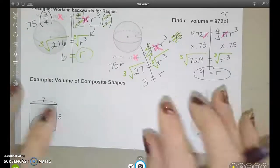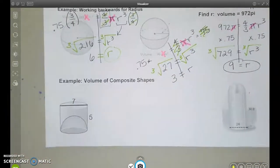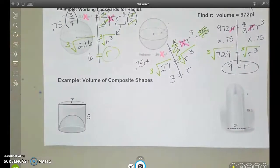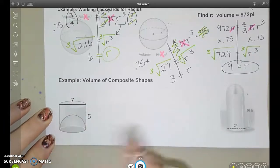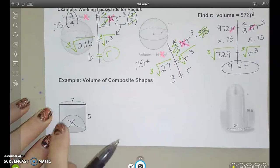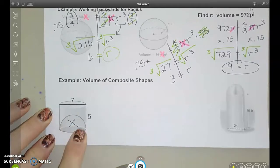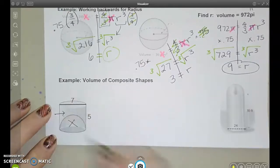Last bit here is some composite shapes where we see spheres and hemispheres. Here I have a cylinder with this hemisphere kind of scooped out. So we know we're going to be subtracting the volume of this hemisphere to get what's left for just this part.